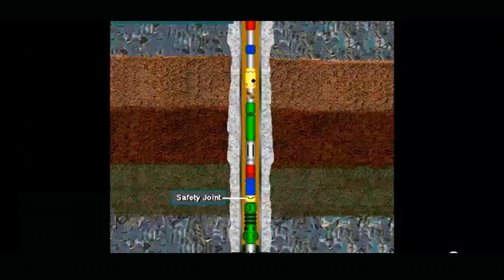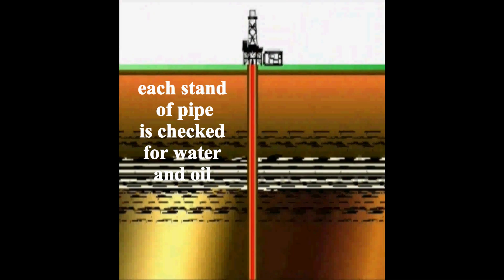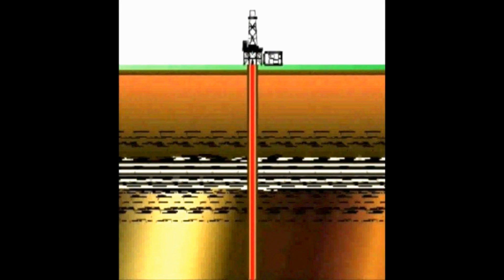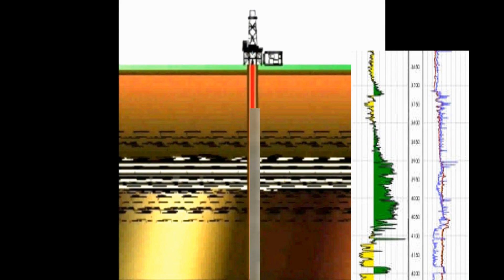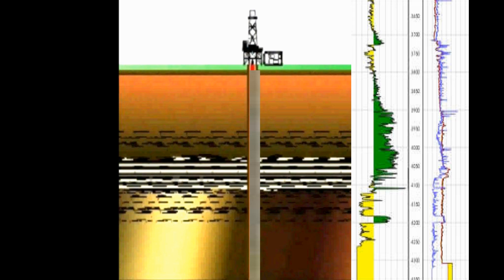Once the testing is complete, the packer is released and the BHA is pulled out. As the string is pulled out, each stand is checked for water and oil. The number of stands that contains oil or salt water is also recorded and becomes another method of evaluating the formation.